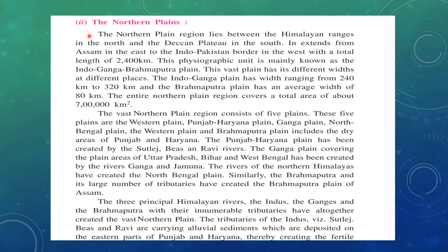We have already learned that rivers originating from the Himalayan ranges are responsible for the formation of the northern plains. The northern plain is located right between the Himalayas in the north and the Deccan Plateau in the south. It extends from Assam in the east and stretches till about the Indo-Pakistan border, that is Punjab and Rajasthan in the west.